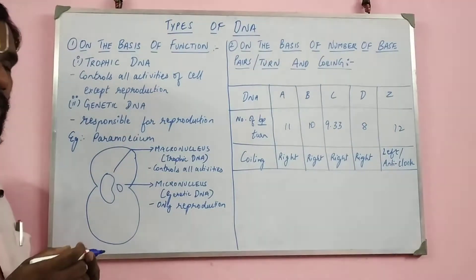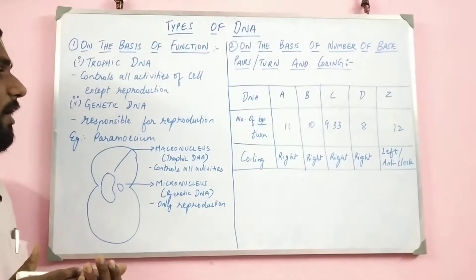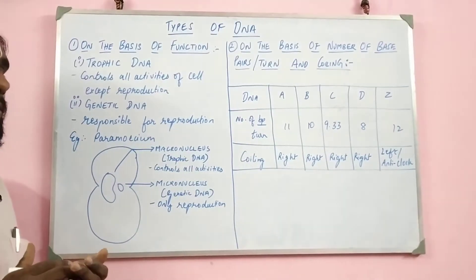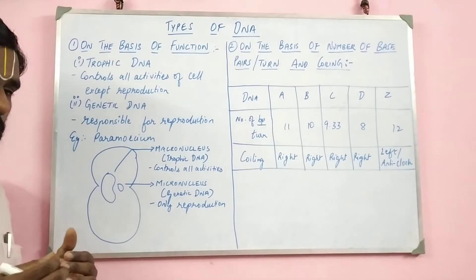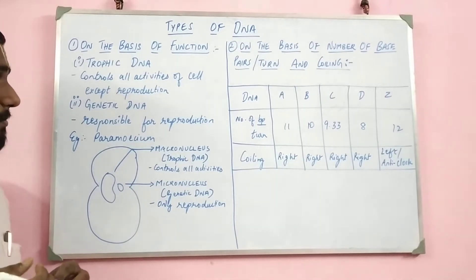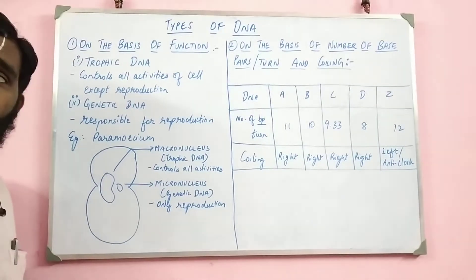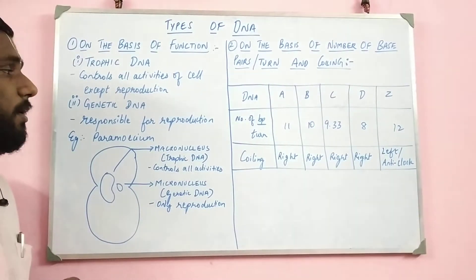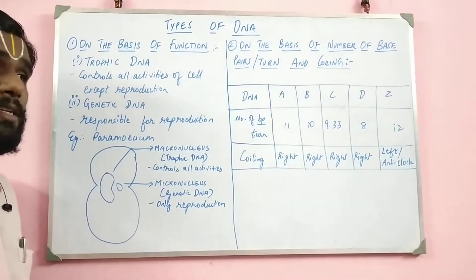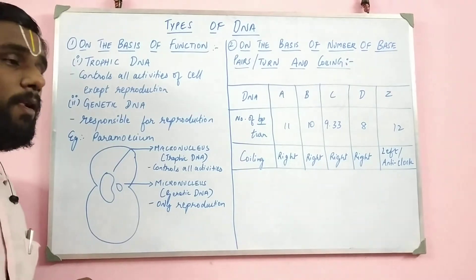On the basis of their function, every DNA can be classified into two categories: number one, the trophic DNA, and number two, the genetic DNA.